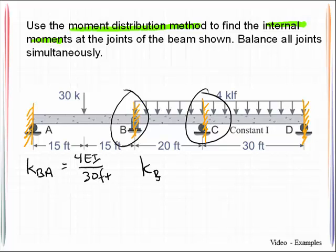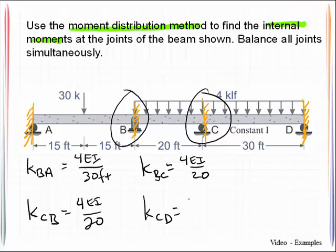Stiffness factor at joint B of member BC is equal to 4EI over 20 and then we can move on to joint C looking at member CB that's 4EI over 20 and K_CD is equal to 4EI over 30.